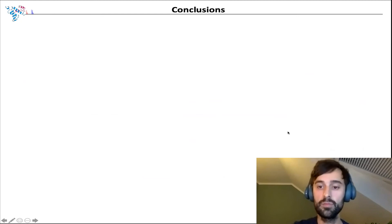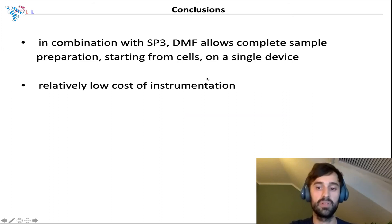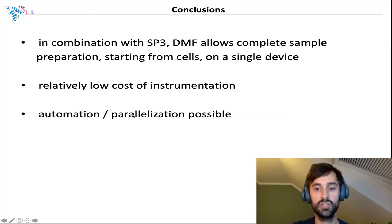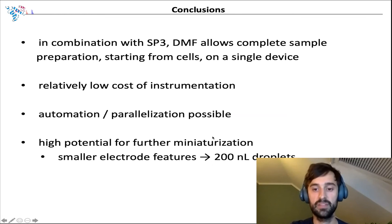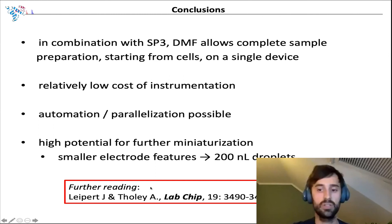With that, I want to make a first conclusion of our results. Our DMF SP3 protocol allows us to do the complete workflow starting from the cells. In the case of the DropBot, the instrumentation is not expensive. There is potential for further automation, and the same applies for miniaturizing the workflow — it has been reported that with smaller features on these chips, you can handle about 200 nanoliter droplets, and with other DMF systems even lower volumes are possible. The work with the Jurkat T-cells has been published last year in the journal Lab on a Chip.